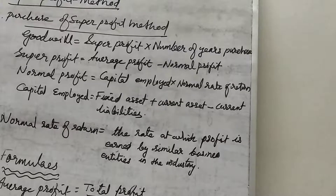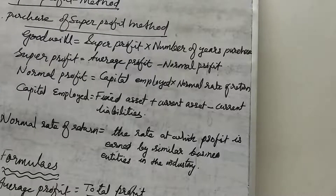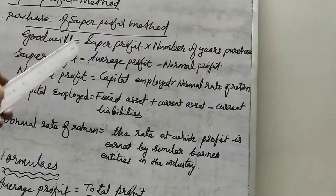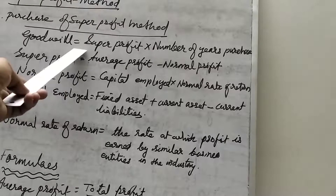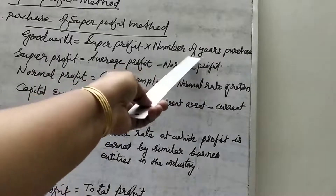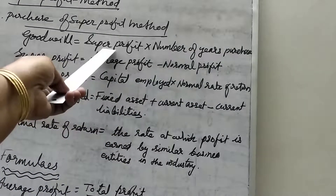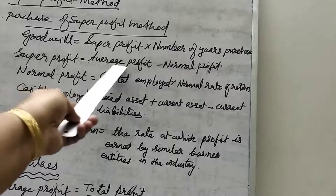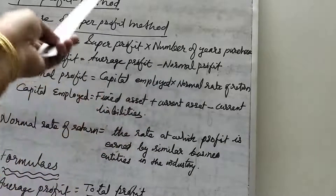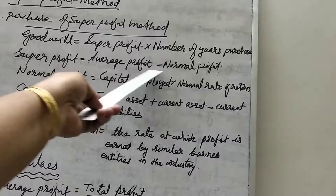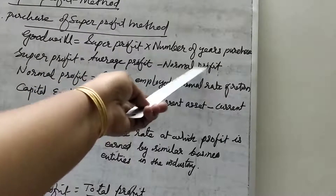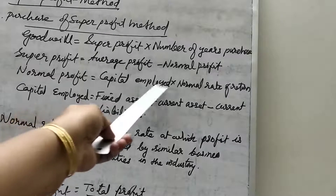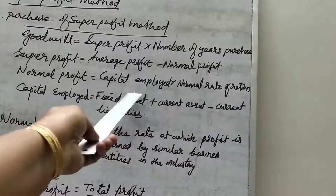The second method is the super profit method. Under the purchase of super profit method, goodwill is equal to super profit multiplied by number of years of purchase, where number of years of purchase is given in the question. We need to find out the super profit first. Super profit is equal to average profit minus normal profit.